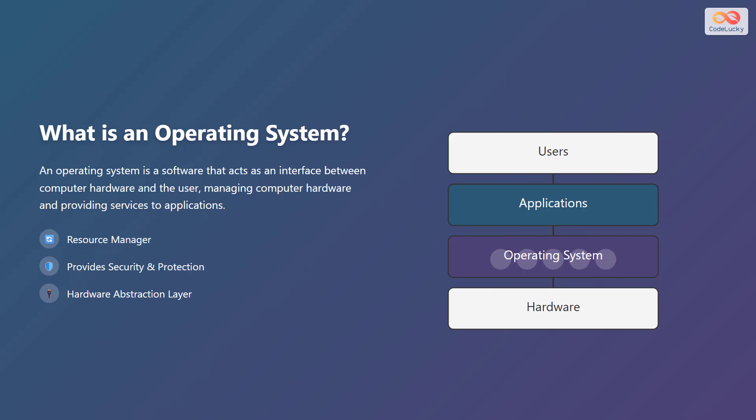Think of the operating system as the conductor of an orchestra, making sure each instrument, or hardware component, plays its part in harmony. The operating system sits between the user and the hardware. On top is the user layer, below the operating system is the hardware layer, and between the layers are the applications. The components of the operating system are shown as smaller circles inside the operating system.